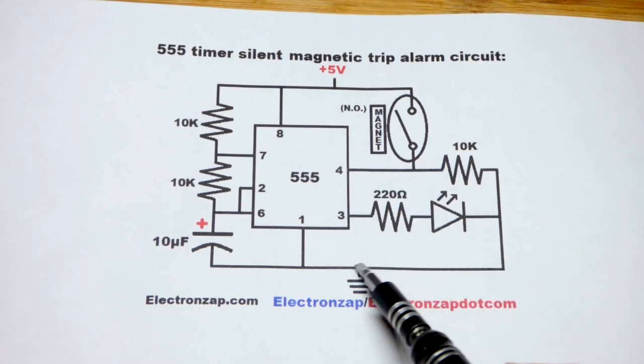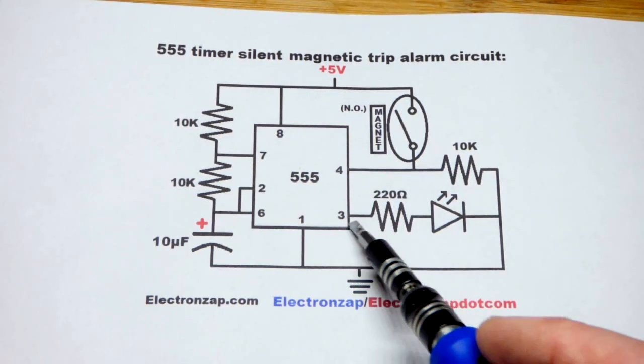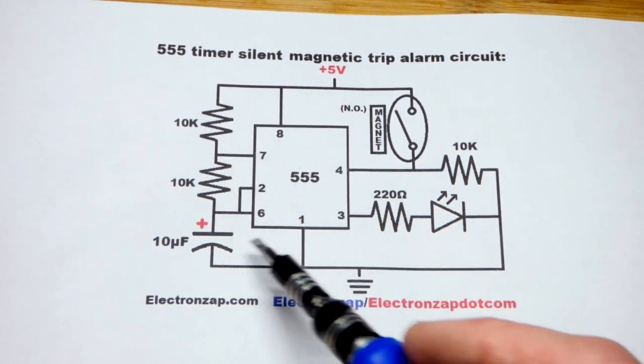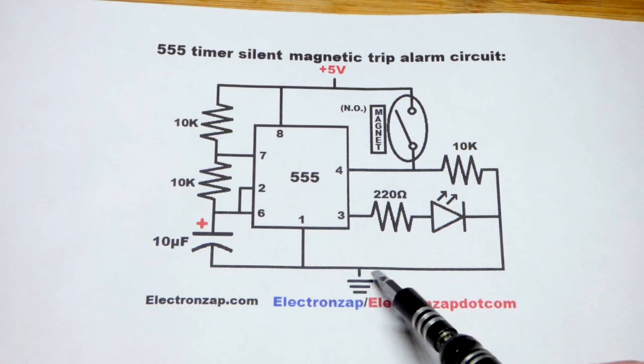When pin 4 is connected to ground, that tells pin 3 to just stay low. It also tells pin 7 to just keep letting everything discharge to ground.